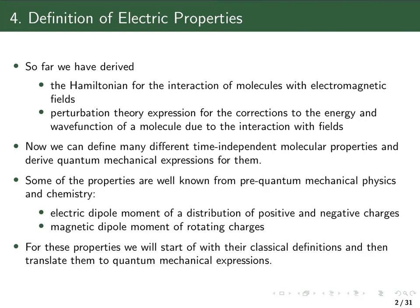In the first part of the book, we derived extra terms in the Hamiltonian of a system which describe the interaction of molecules with external or internal electromagnetic fields. We then used perturbation theory to derive corrections to the energy of a system due to these interactions, and to derive expectation values using response theory.